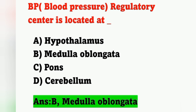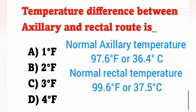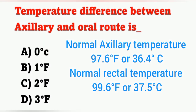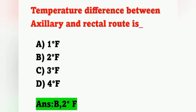Next question: the temperature difference between axillary and rectal route is — options: A) 1°F, B) 2°F, C) 3°F, D) 4°F. Normal axillary temperature is 97.6°F (36.4°C) and normal rectal temperature is 99.6°F (37.5°C). The difference is 2 degrees Fahrenheit — option B is correct. In Celsius, the difference is 1.1°C.